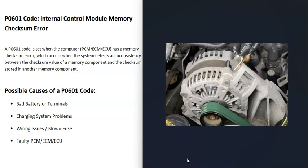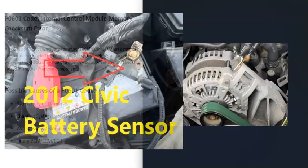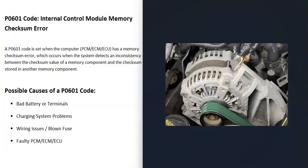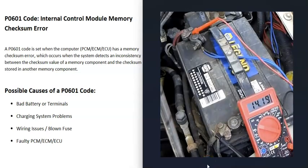Another possible cause is a charging system problem, mainly related to the alternator. The alternator keeps the battery charged, and if it's putting out voltage that's too low or too high, that causes problems. Some newer vehicles also have a battery sensor located near the terminal, and if that sensor goes bad it can affect the charging system. If you have a multimeter, there's a quick way to test the alternator output.